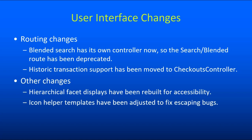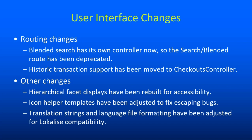Icon Helper templates have been adjusted to fix some inconsistent escaping behavior. So if you've created your own Icon format for some reason, you might want to review this — otherwise it shouldn't matter to you. And many of our translation strings and the formatting of our language files have been adjusted to support integration with the localized internationalization platform. If you have custom language files, you can just use the command line normalize_language tool and it will bring everything up to spec. But if you've overridden your strings, review the changelog to see if any strings you've overridden have been renamed or adjusted.